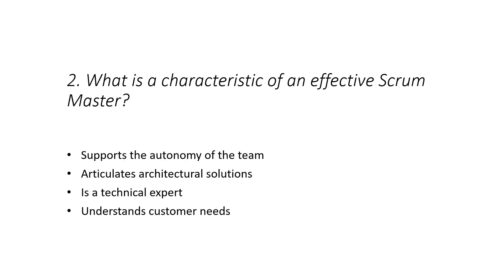What is the characteristic of an effective Scrum Master? You need to be clear on the roles and responsibilities of the Scrum Master to answer this question. The options are: supports the autonomy of the team, articulates architectural solutions, is a technical expert, and understands customer needs. The right answer is the first one — supports the autonomy of the team — which means the Scrum Master ensures the team can work independently in a self-sufficient mode.